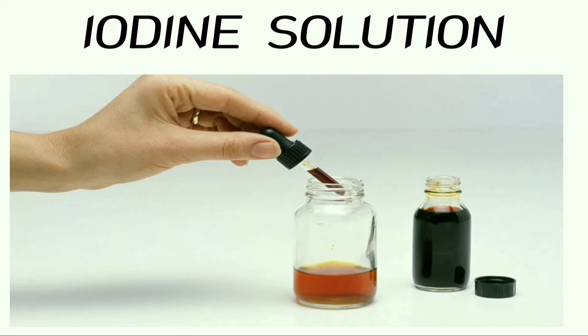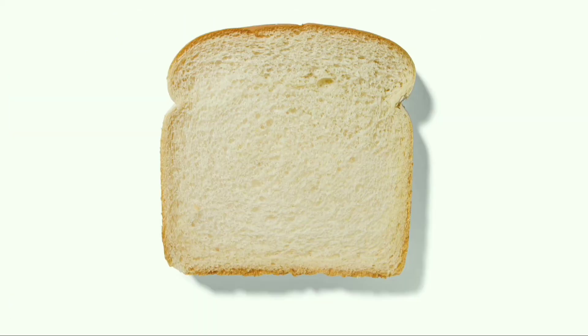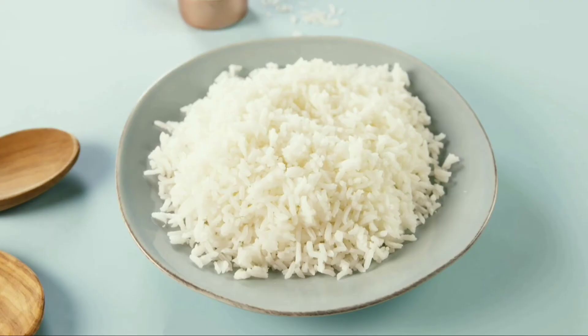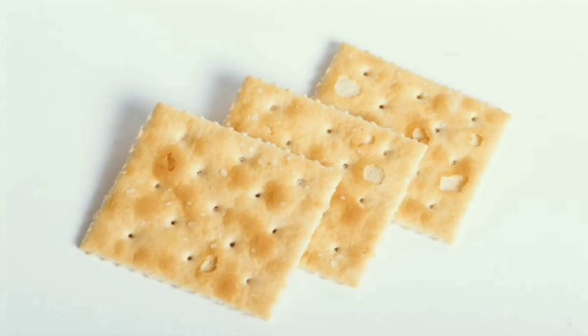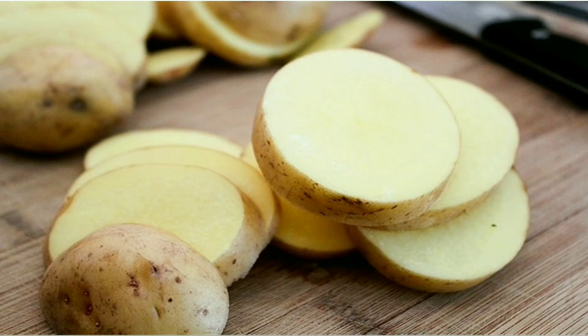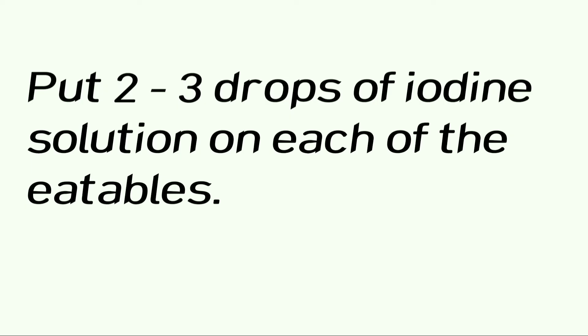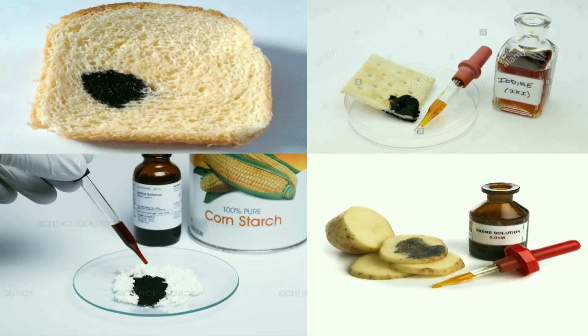Take iodine solution, a slice of bread, rice, biscuits and a sliced potato. Put 2-3 drops of iodine solution on each of the eatables. You will observe that a blue-black color appears on all the food items, which indicates the presence of starch.